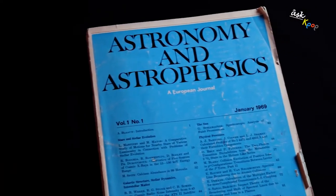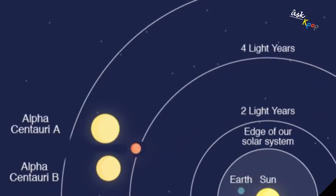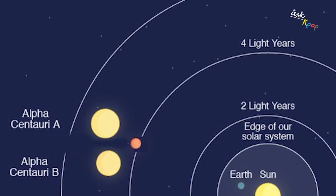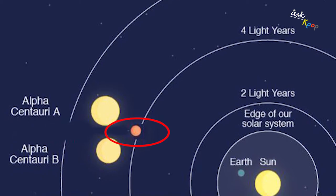According to new research published in the journal Astronomy and Astrophysics, scientists have found traces of a third planet orbiting Proxima Centauri, the closest star to the Sun.